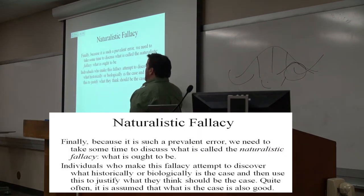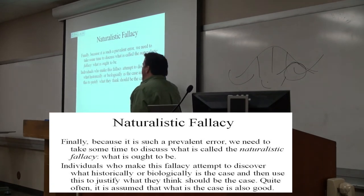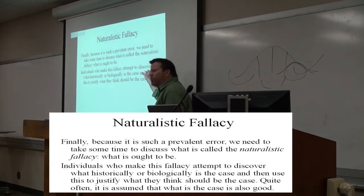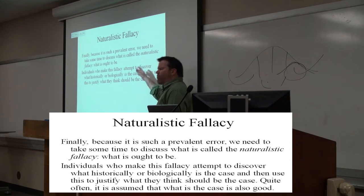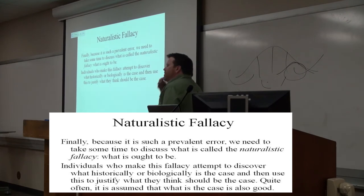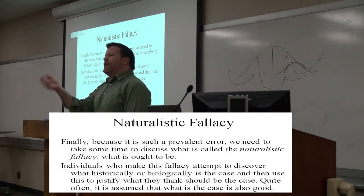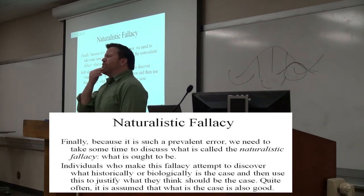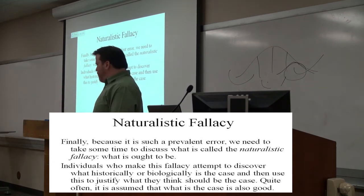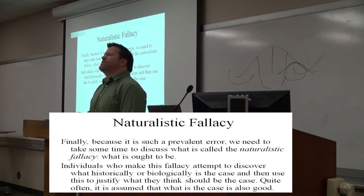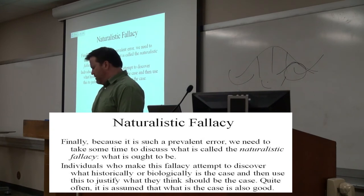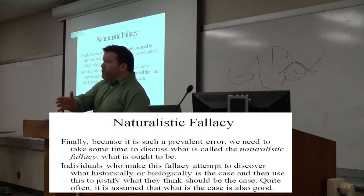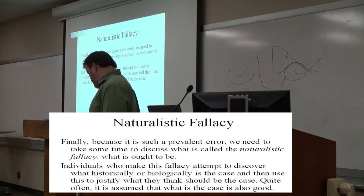The fallacy is assuming that what is ought to be the case. Now, people also throw on top of that that it is good that it's the case, that it's right that it's the case. But you hear this over and over. You might hear someone say, well, females are able to have babies. Therefore, they should have babies. Fallacy. Humans divide people into colors of skin. Therefore, we should divide people into colors of skin. That's a fallacy. That we do it doesn't mean we ought to do it.